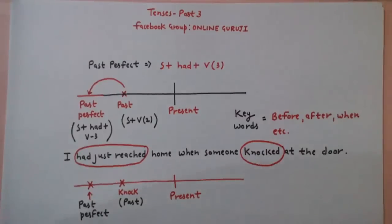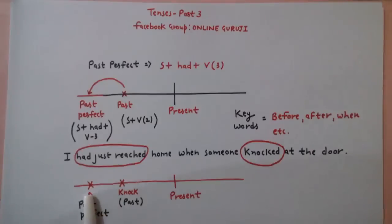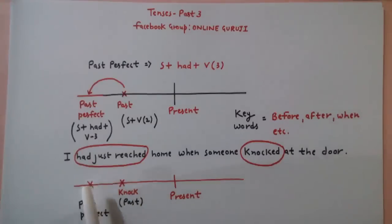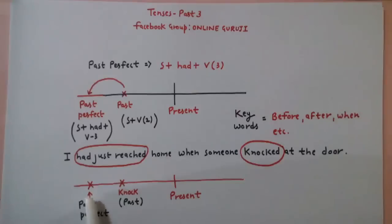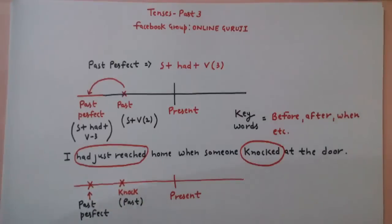तो जो Past Perfect के tense होंगे, इस पे आप लोगों के दो events होंगे past पे. जो event पहले हुआ — मतलब past के past में जो हुआ — वो वाला आप लोगों के Past Perfect में होगा. और जो बाद वाला event होगा, वो Simple Past पे होगा.